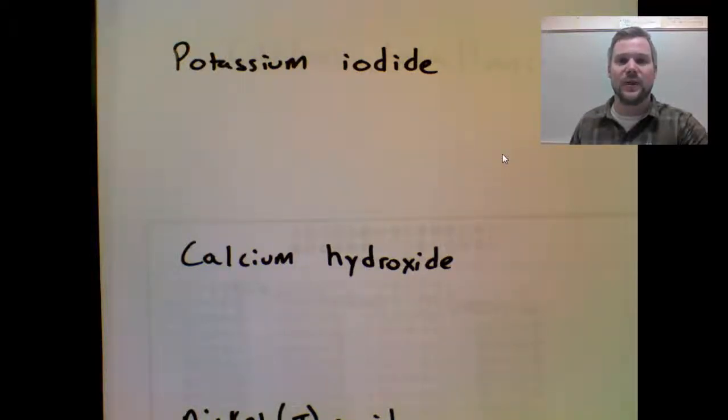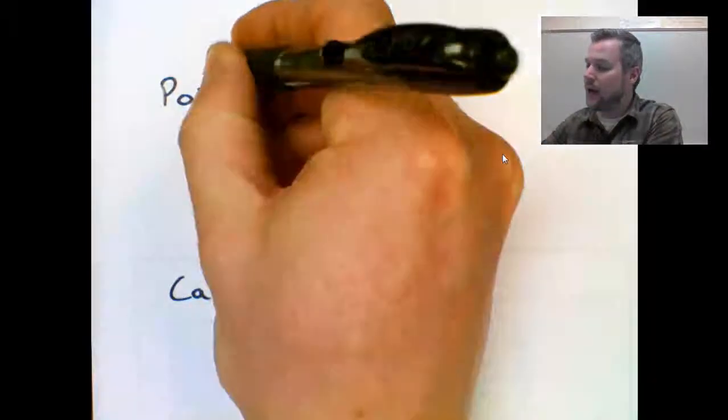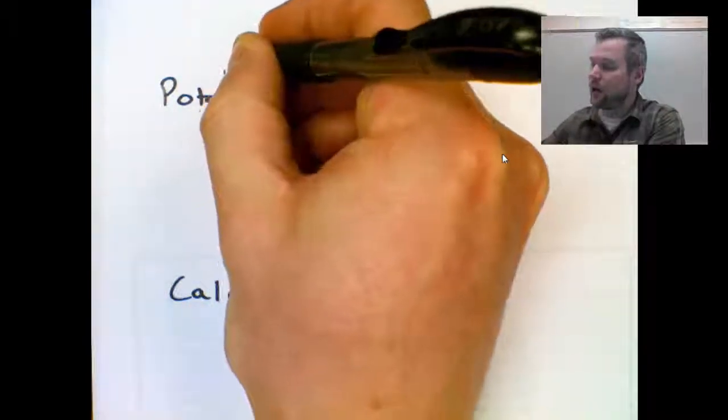The one prefix we would see would be di for chromate. If we have dichromate, that's still ionic because dichromate is a polyatomic ion. So on these ones, you want to write down the ion symbol and charge above each name.